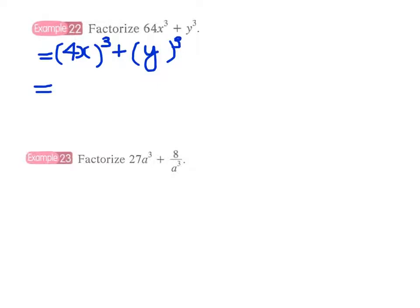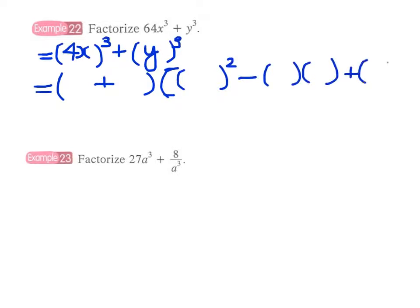Therefore we can apply the sum of two cubes formula: a³ plus b³ equals a plus b, multiplied by a squared minus ab plus b squared.